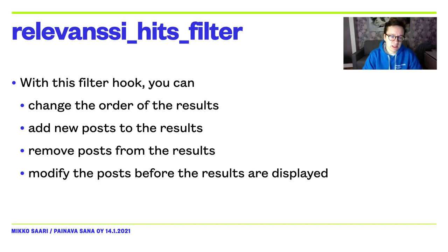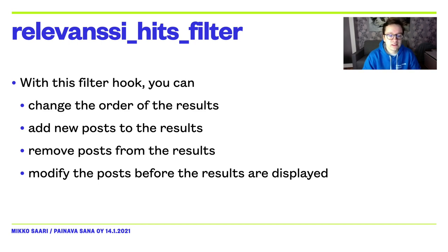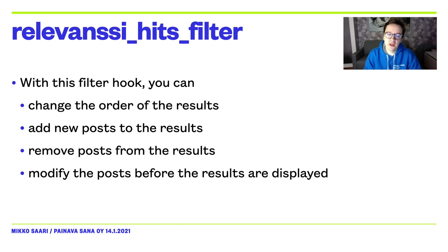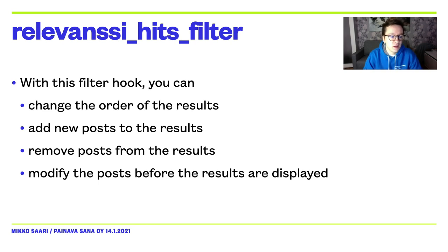If you want to customize the search results, Relevanssi offers lots of tools for that. One of the most powerful is the relevanssi_hits filter, which is a real superhero filter hook. This filter hook is very simple — it gives you access to an array of posts Relevanssi has found, and expects you to return the array back to Relevanssi. Meanwhile you are free to do anything you want with the array. With this simple hook you can adjust the search results any way you want: reorder the results, insert new posts, remove posts from the results, or even modify the post objects. After you've processed the results, Relevanssi will paginate them and pass the correct set of posts for your theme to display.